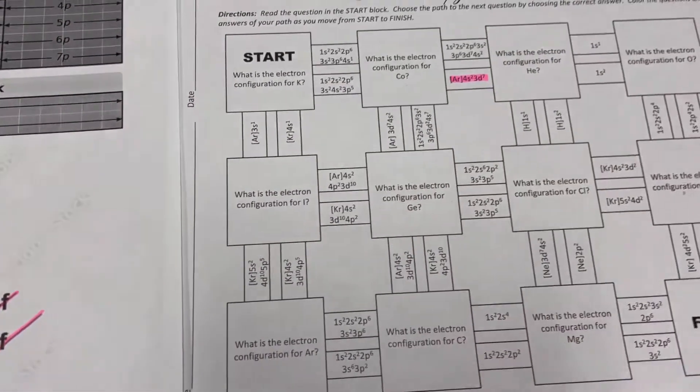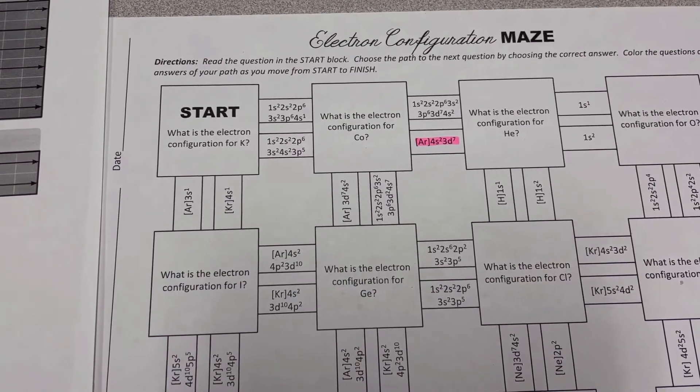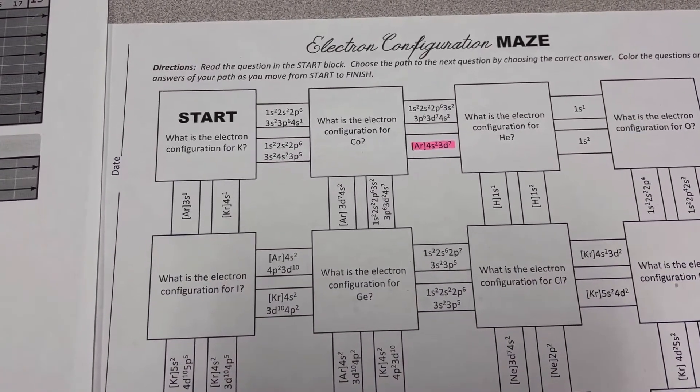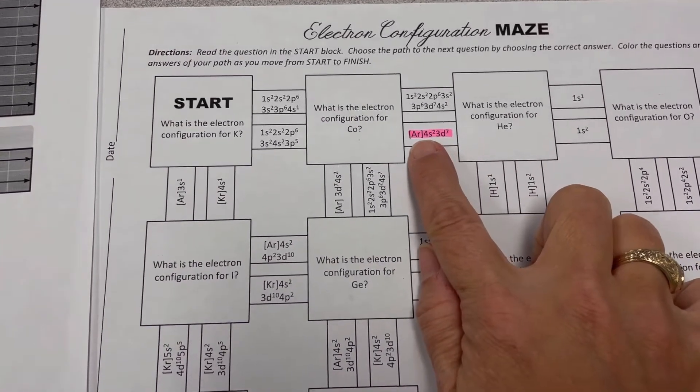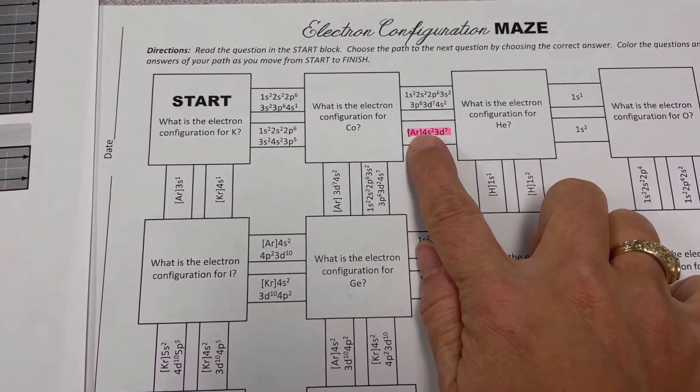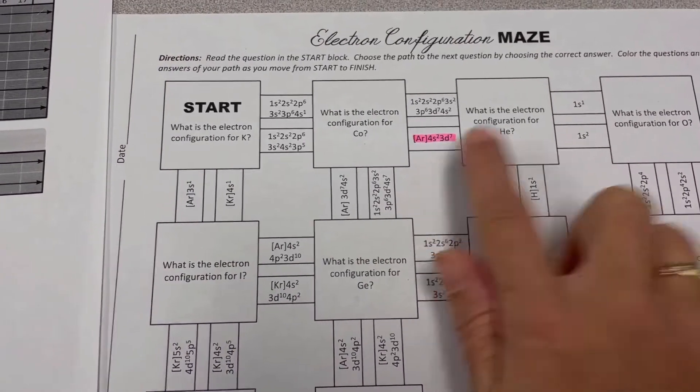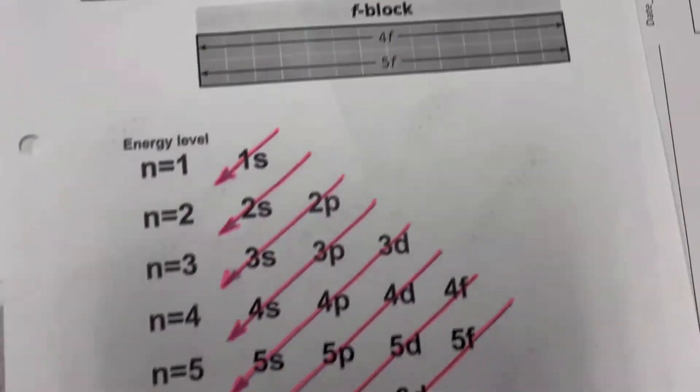So this means if we're going to write the configuration for an element and let's say that it's got more electrons than argon, we could actually substitute argon's configuration in brackets just like this and then finish it out for that element. So let me give you an example of what I'm talking about.